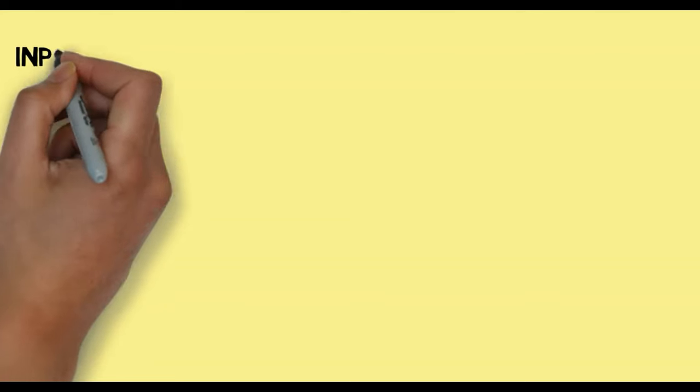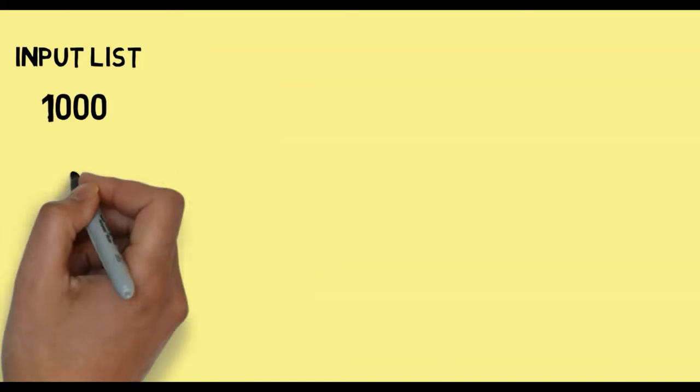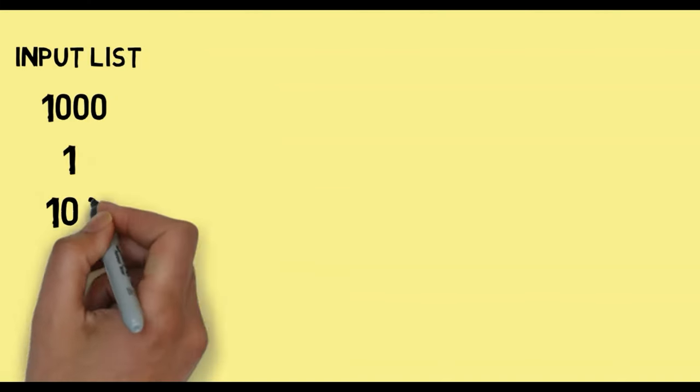Here is the input list of numbers: 1000, 1, 100, 101, 15. Before we start with actual sorting of the elements, let me tell you in brief what Bubble Sort does. Bubble Sort actually bubbles up the largest number to the top — or in our case to the bottom — because we are going to sort in ascending order.